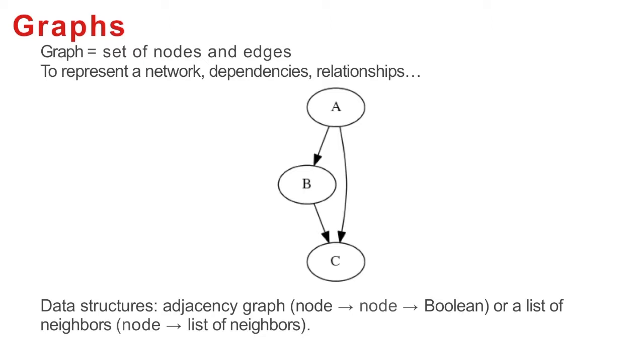How do we represent that with data structures? There are several options. One is the adjacency graph. There's a boolean that indicates if two nodes are linked. When given two nodes, for instance A and C, it'll answer true because A is linked to C. Another way to represent graph is with a neighbor list. Graph A has two neighbors, B and C. Graph C has no neighbor.